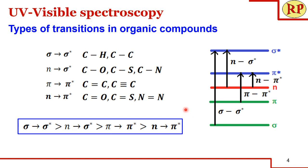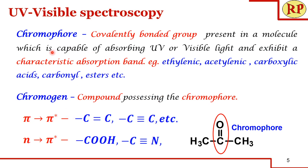A chromophore is a covalently bonded group present in a molecule which is capable of absorbing UV or visible light and exhibits a characteristic absorption band — for example, ethylenic, acetylinic, carboxylic, carbonyl, or ester groups. Taking acetone as an example, the carbonyl group is the chromophore. The whole acetone molecule is called a chromogen — that is, the compound possessing the chromophore is called a chromogen. The two common transitions are pi to pi* and n to pi*.